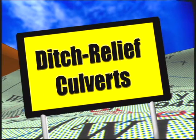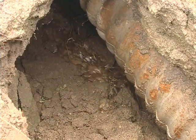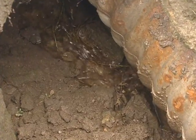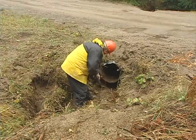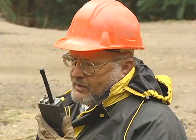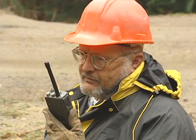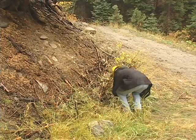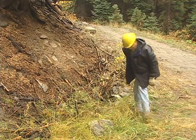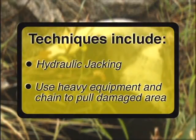As you continue to inspect beyond the traveled way, check the condition of the culverts themselves. Water flowing under or around the culvert is a major problem. One solution is to pack clay material under and around the culvert inlet. The culvert may eventually need to be replaced. Also check to make sure the culvert is not physically damaged. If you find a pipe that's crushed or damaged, try to fix it. Some techniques used for field repair include hydraulic jacking or gently pulling the damaged area using a small chain attached to heavy equipment.